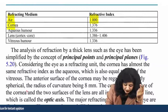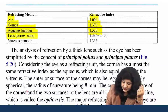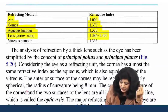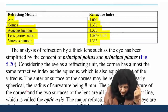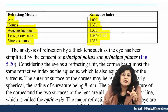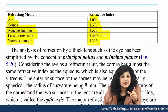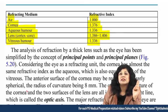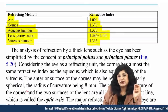cornea is 1.376, aqueous humor is 1.33, lens is 1.392 to 1.4, and vitreous humor is 1.33. You should always remember these refractive indices and that the anterior surface of the cornea is the most important refractive surface.